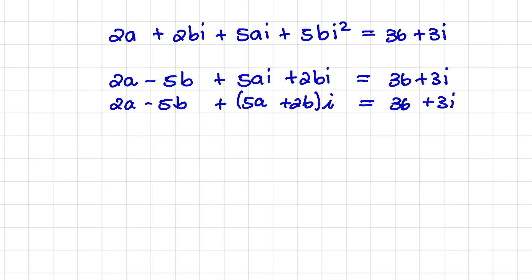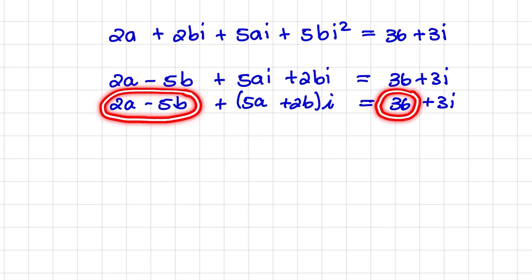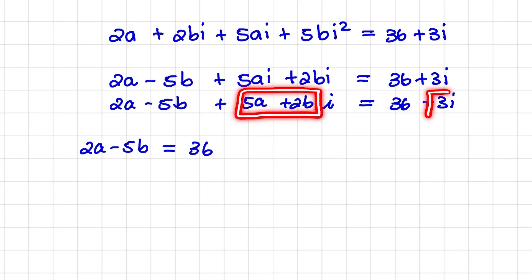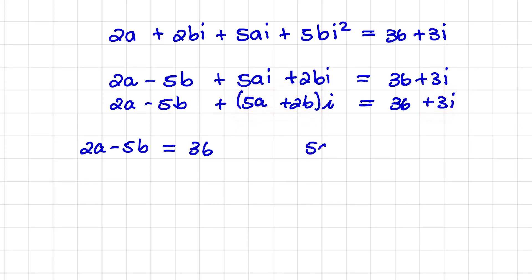We know that the real parts of this complex number equal the real part on the right hand side. So 2a − 5b = 36. And the imaginary part 5a + 2b equals the imaginary part on the right hand side, so 5a + 2b = 3.